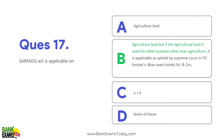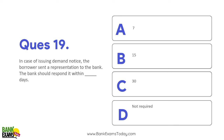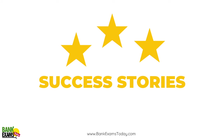SARFAESI is not applicable on agricultural land, but if the agricultural land has been used for non-agricultural purposes — for example, an industry has been set up on agricultural land — then SARFAESI is applicable. The aggrieved party under SARFAESI Act can make an appeal to DRT and DRAT. In case of a demand notice, if the borrower sends a representation to the bank, the bank must reply within 15 days, and the borrower must clear dues within 60 days of receiving the default notice.